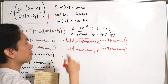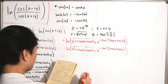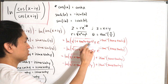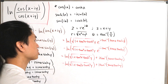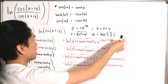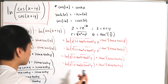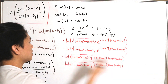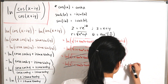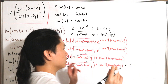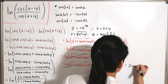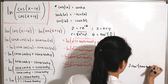Applying log properties, each term splits into ln of the modulus plus the exponent. The two ln-of-modulus terms cancel since the numerator and denominator share the same modulus. Adding the remaining exponent terms gives double the argument, so the final simplified expression is 2i·arctan(tan(x)·tanh(y)).